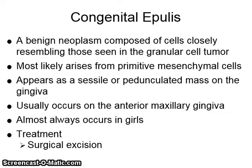Congenital epulis is a benign neoplasm composed of cells closely resembling those seen in the granular cell tumor. They most likely arise from primitive mesenchymal cells and appear as a sessile or pedunculated mass on the gingiva. They usually occur on the anterior maxillary gingiva, almost always in girls, and are treated by surgical excision.